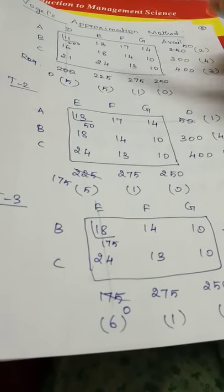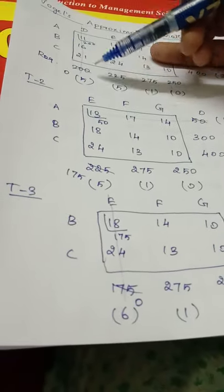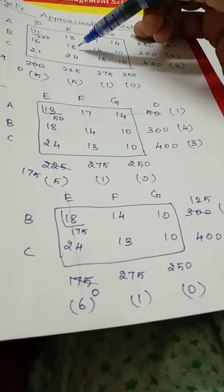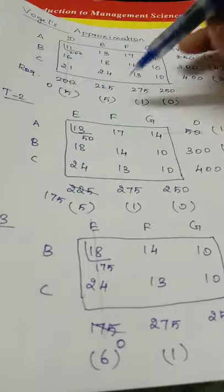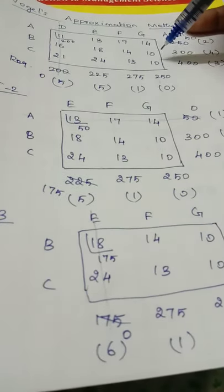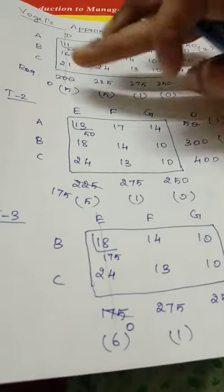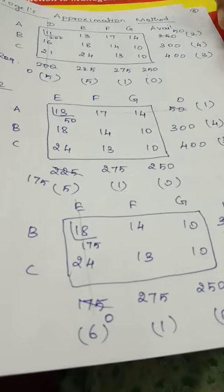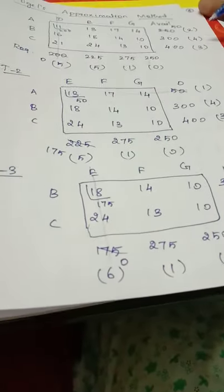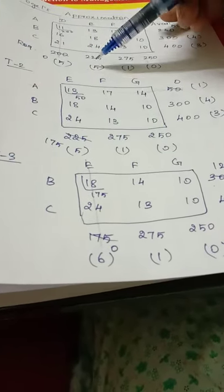For the second row, least is 10 and next least is 14, so difference is 4. For the third row, least is 10 and next least is 13, so difference is 3. Similarly for each column: first column least 11, next least 16, difference 5; second column least 13, next least 18, difference 5; third column least 13, next least 14, difference 1; fourth column least 10, next least 10, difference 0. So we find the row and column differences for each.